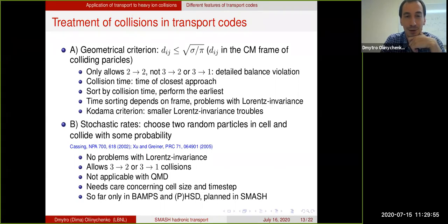With the geometrical criterion approach, the distance d_ij is Lorentz invariant. Everything is fine with the Lorentz invariance. It is Lorentz invariant because it is calculated in the center of mass frame of colliding particles. However, the time of collision is not Lorentz invariant. The time is the time of the closest approach in the computational frame, and computational frame can be the lab frame, center of mass frame, or any other frame. In transport codes, collisions are happening after sorting by time. You'll find a lot of potential collisions and sort them by time, perform the earliest, and this sorting by time is not exactly Lorentz invariant. It depends on the frame because this time of closest approach depends on the frame.